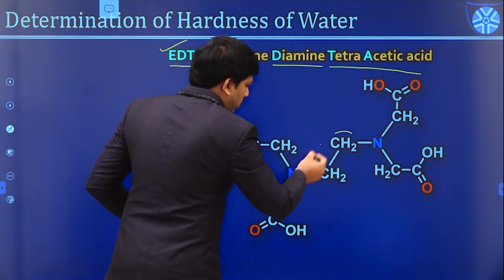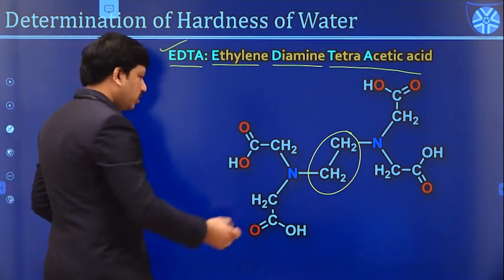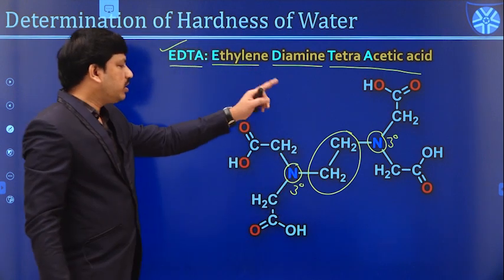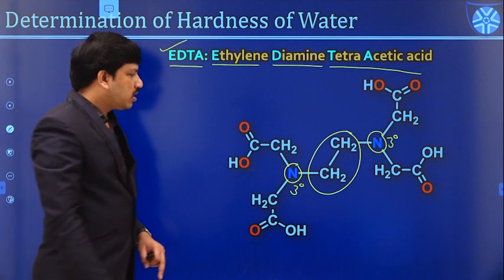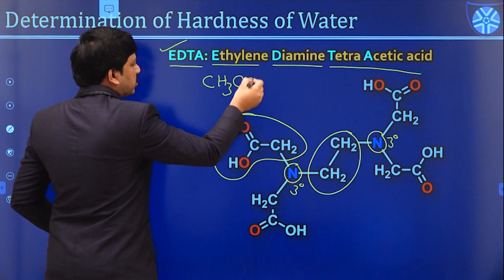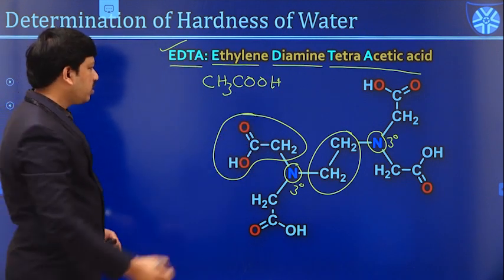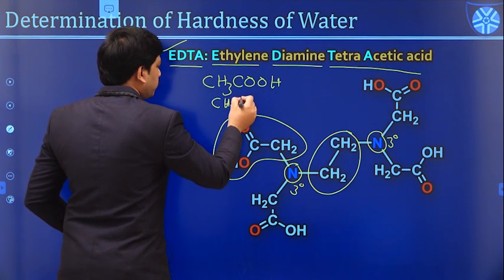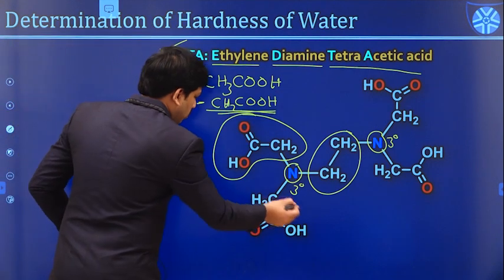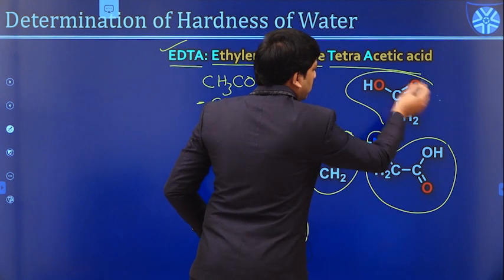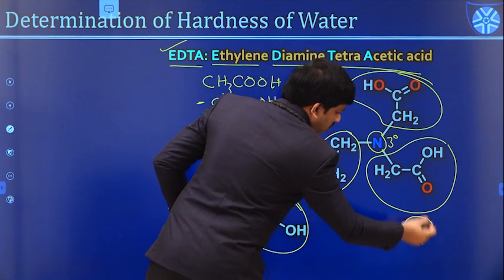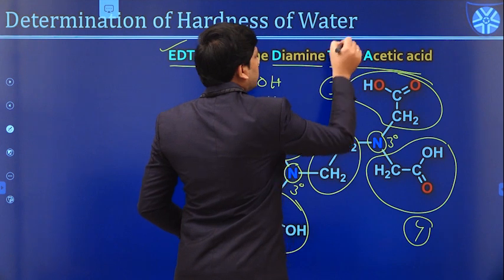Looking at the structure: this group is called the ethylene group, and the molecule has two nitrogen atoms — these are tertiary amine groups. So the molecule contains two amine groups. For tetraacetic acid: acetic acid has the formula CH₃COOH. If you remove one hydrogen from the CH₃ group, you get a CH₂COOH group — that is the acetic acid group. This molecule contains four such acetic acid groups. Four means tetra — hence tetraacetic acid.